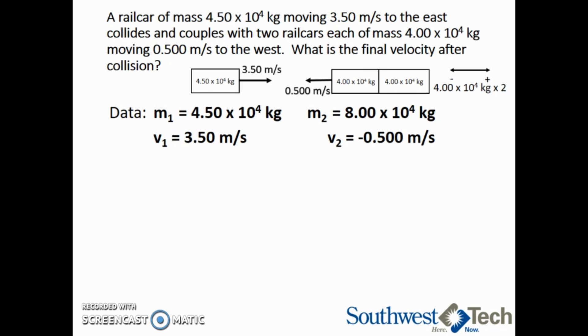This velocity is a negative because it is traveling west or to the left. We are trying to find V prime, which is the final velocity after collision.